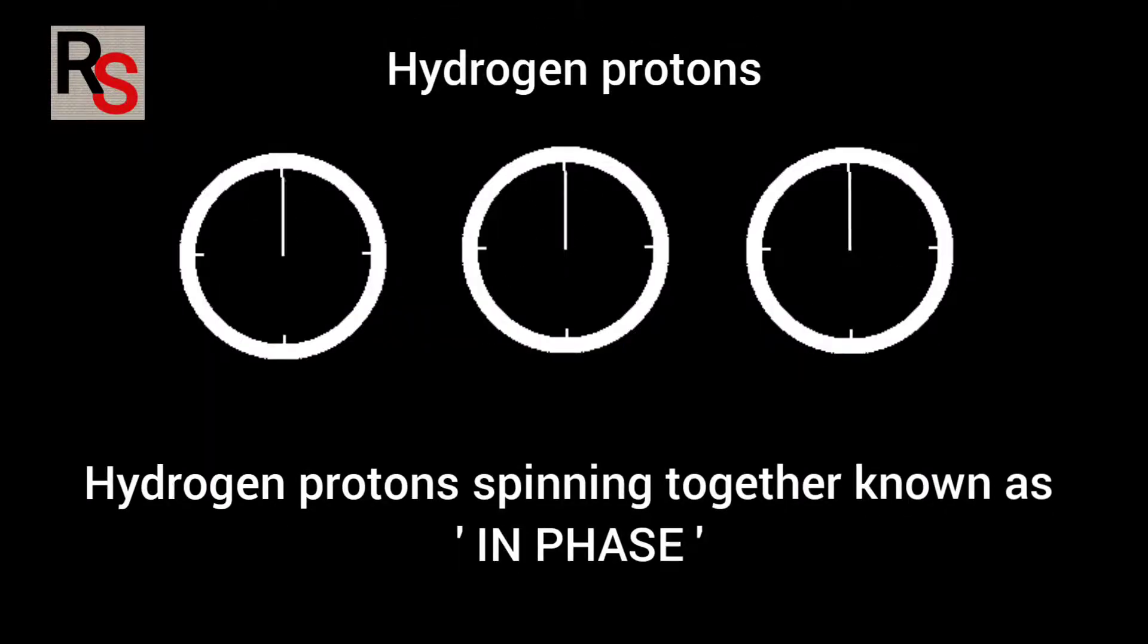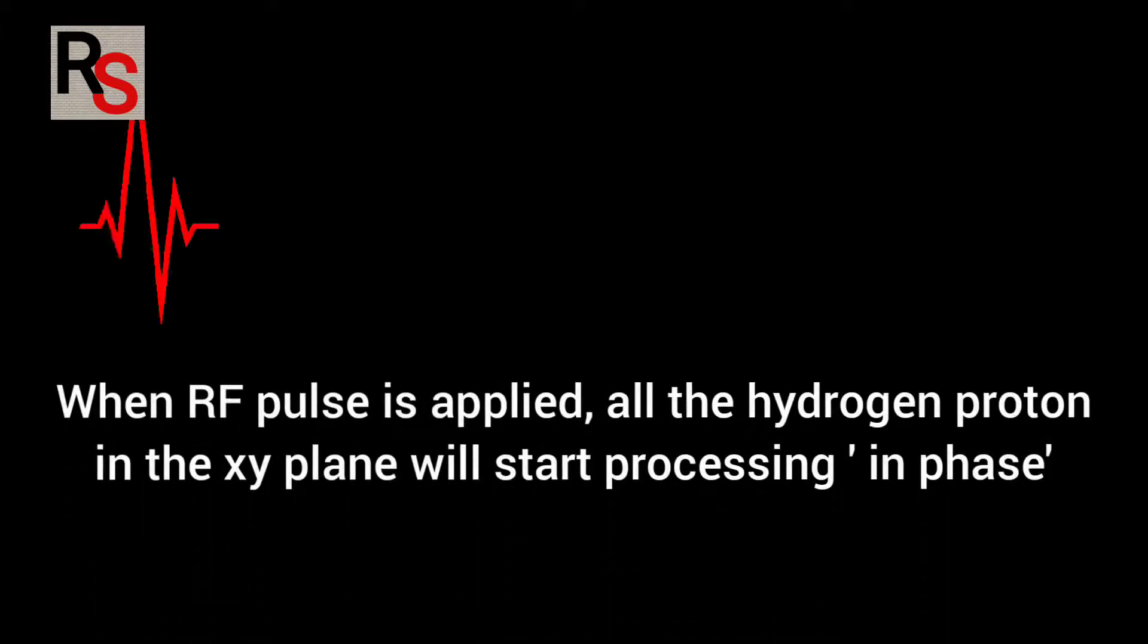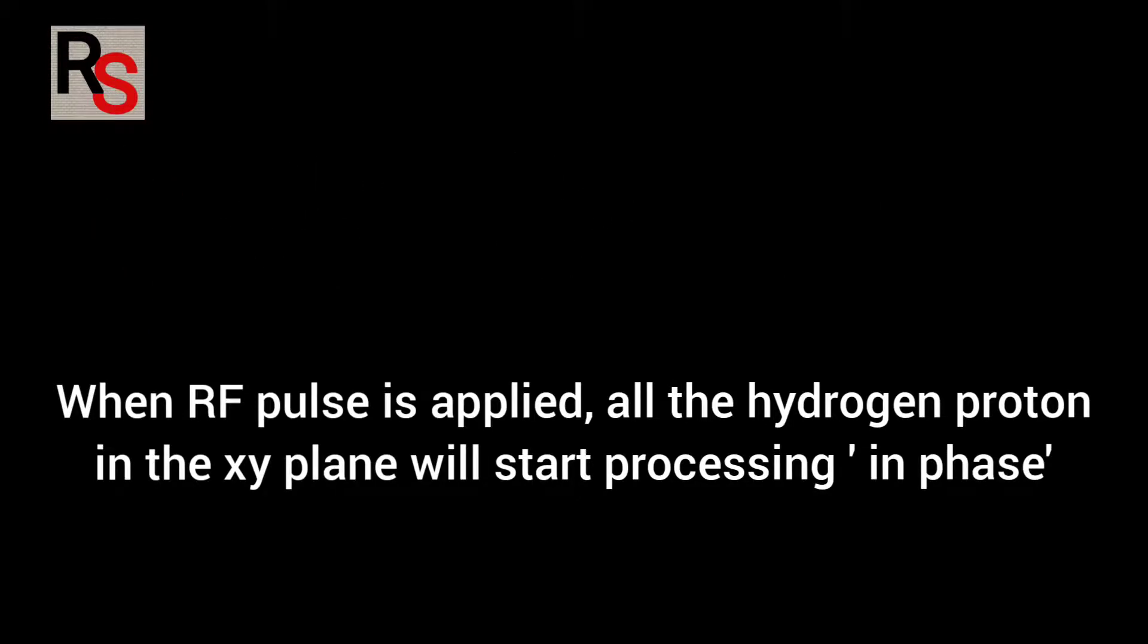Please remember one thing: when hydrogen protons precess together this is known as in phase and when hydrogen protons precess separately this is known as out of phase. So when the RF pulse is applied all the hydrogen protons in the XY plane will start precessing in phase. Please remember this point. I will come back to this point later.